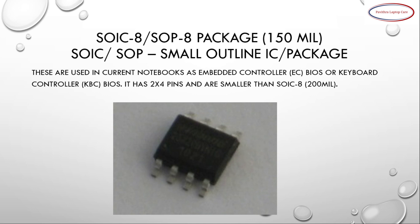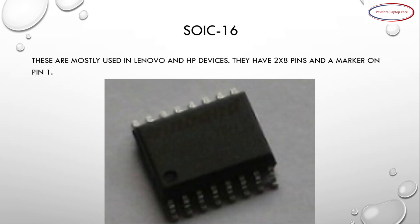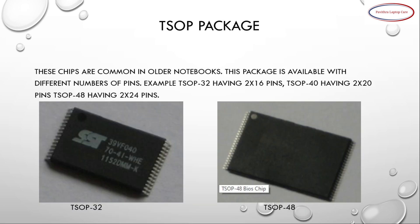The 150 mil variant is used in current notebooks as an embedded controller, which is EC BIOS or keyboard controller KBC BIOS. It has two rows of four pins and is smaller than the SOIC-8 200 mil. SOIC-16 chips are mostly used in Lenovo and HP devices; they have two rows of eight pins and a marker on pin number one. TSOP packages are common in older notebooks and are available with different numbers of pins, for example TSOP-32 with two rows of 16 pins, TSOP-40 with two rows of 20 pins, and TSOP-48 with two rows of 24 pins.